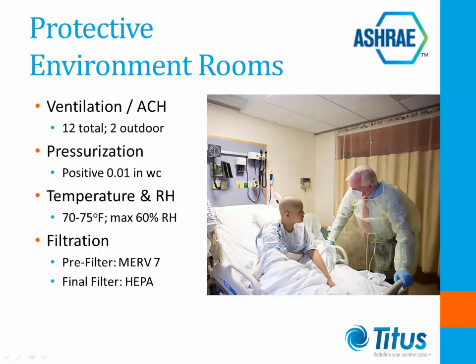Protective environment rooms are designed specifically to protect the patient from exposure to common environmental airborne infections and microbes. PE rooms require a minimum of 12 air changes per hour with at least two air changes of outdoor air. Diffusers must be non-aspirating and located over the patient. Rooms are positively pressurized to prevent contaminants from outside the room from entering the patient space. The design temperature range is from 70 to 75 degrees Fahrenheit with a maximum 60% relative humidity, and there is no minimum humidity requirement for PE spaces. PE rooms require a MERV-7 pre-filter and a HEPA final filter for the supply air.